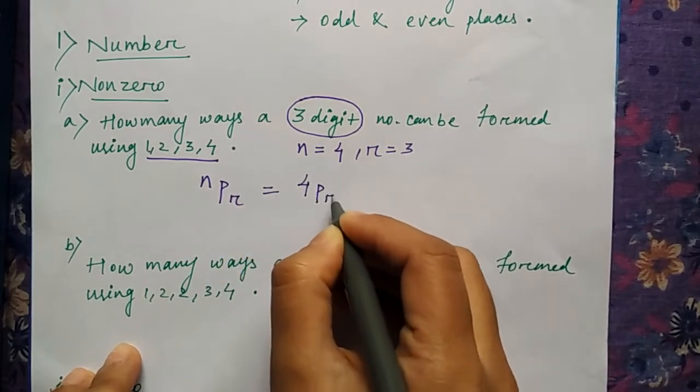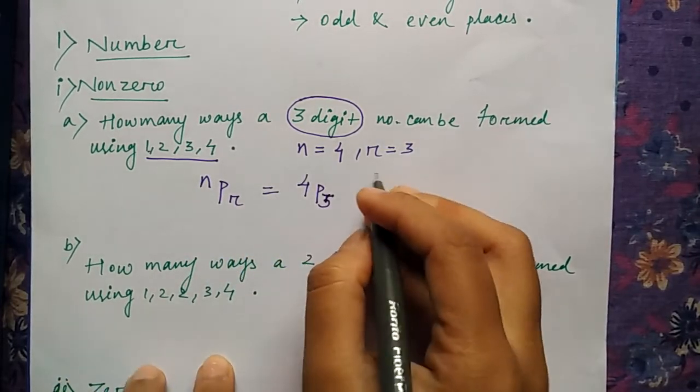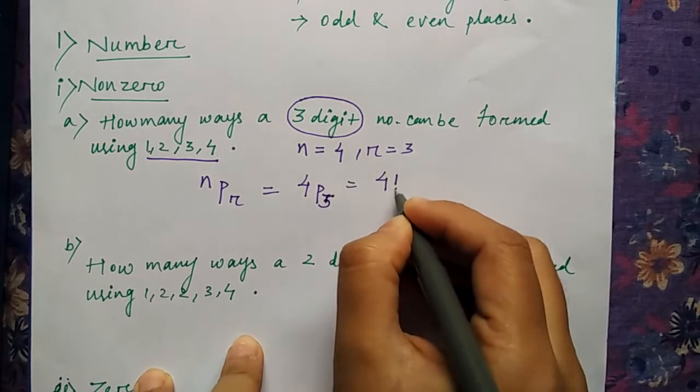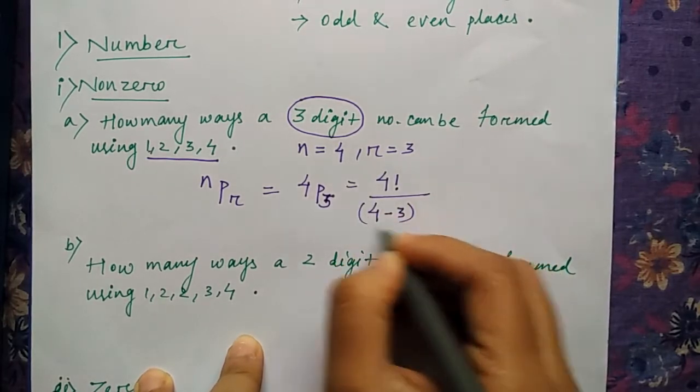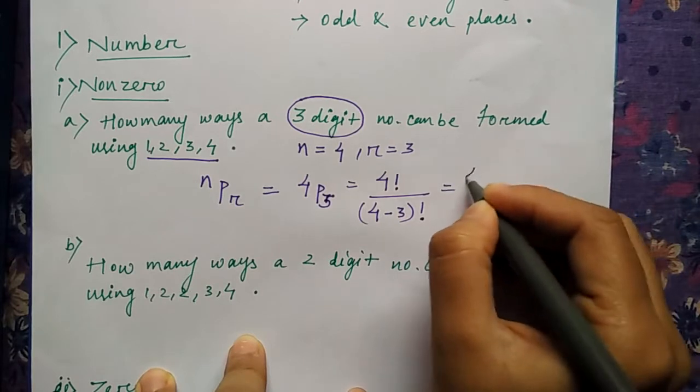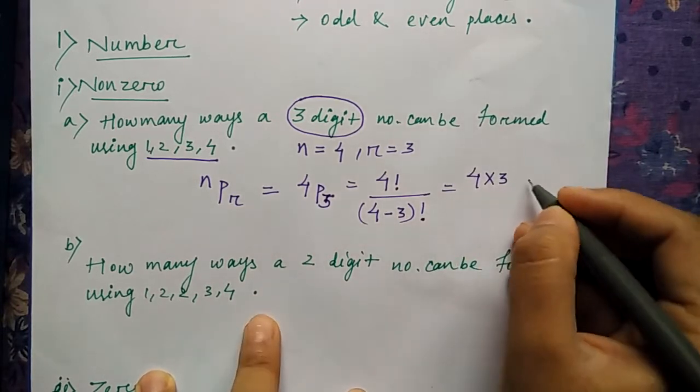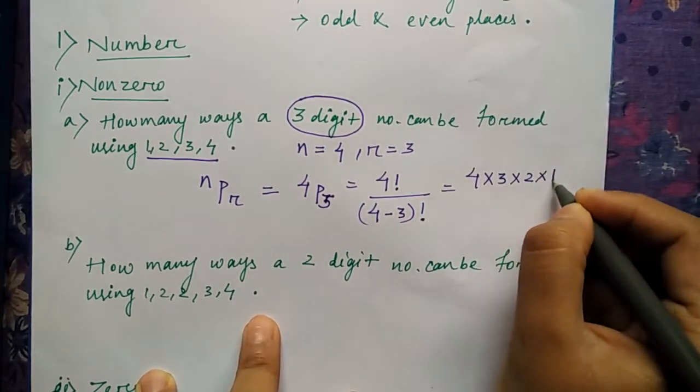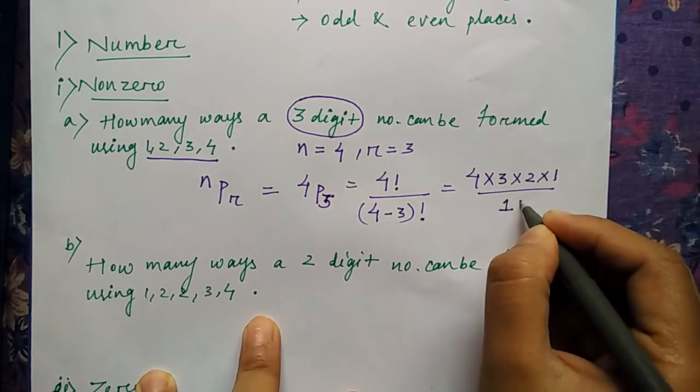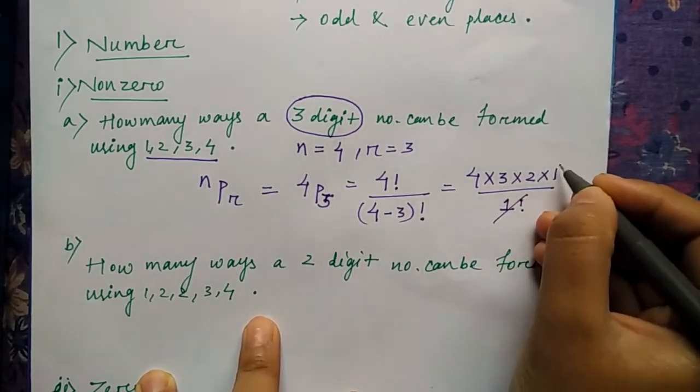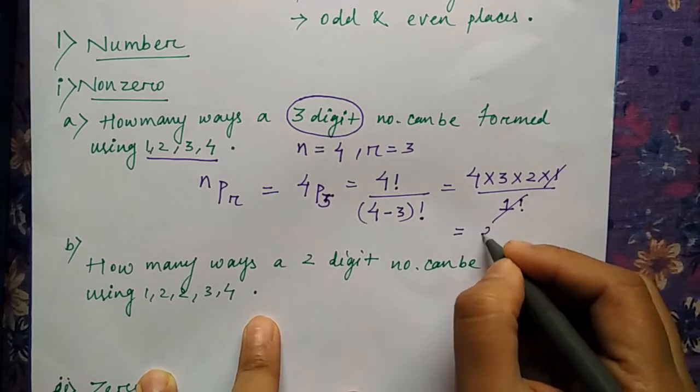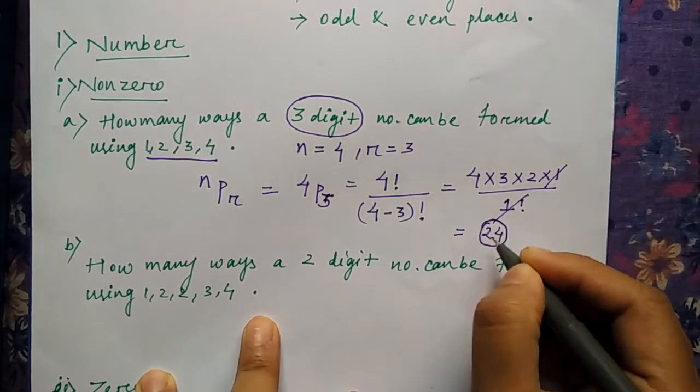So what will be the answer? According to the NPR formula, it will be 4P3. So I told you that n factorial divided by (n minus r) factorial. So it will be 4 factorial—4×3×2×1—divided by 1 factorial, or that is 1. So this will be cancelled out.